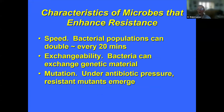But why are microbes so able to develop resistance quickly? First, they reproduce every 20 minutes. Unlike humans, bacteria can exchange genetic material across species. And under antibiotic pressure, resistant mutants emerge, overgrow, and take over. That is the primary cause of increasing antibiotic resistance.